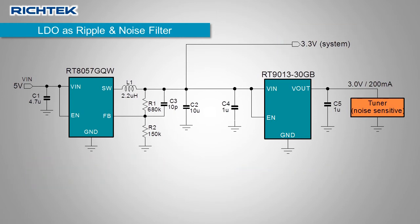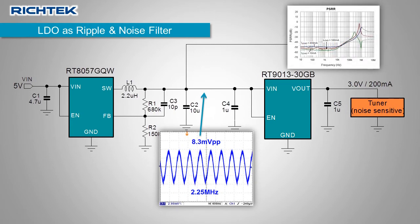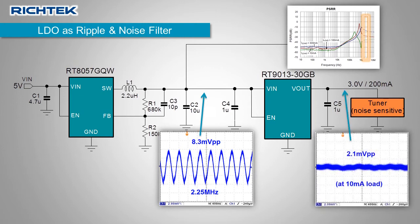The buck output ripple clearly shows the 2.25 MHz switching frequency component, and from the LDO PSRR curves we can see that the LDO cannot actively reject this frequency. The LDO output will therefore also show some 2.25 MHz signal, which becomes higher when the LDO load is increased.